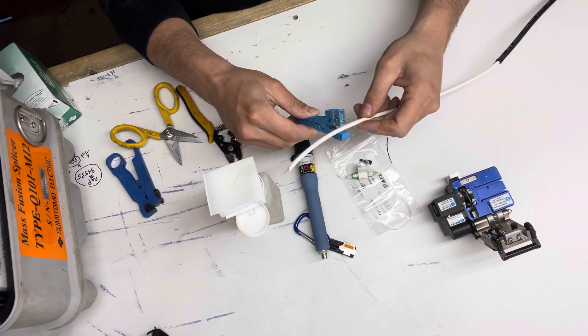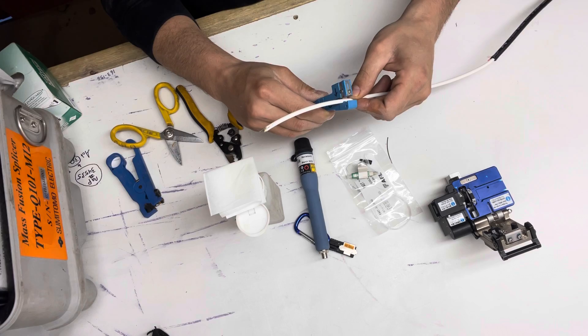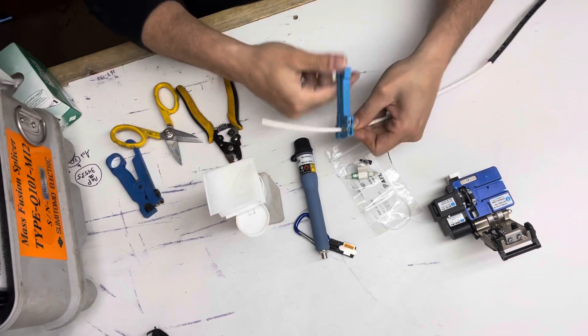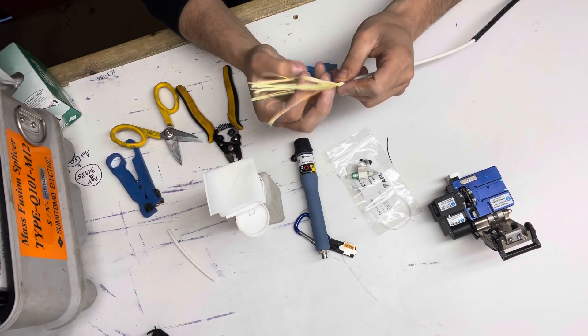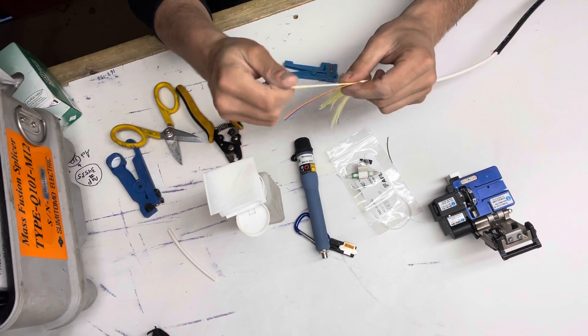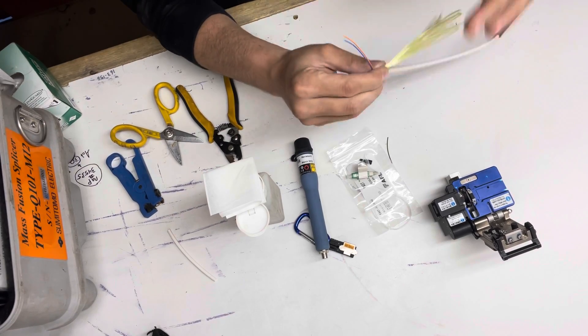Now you can ring cut and expose your two fibers in the drop cable. There's your two fibers. Get rid of the Kevlar.